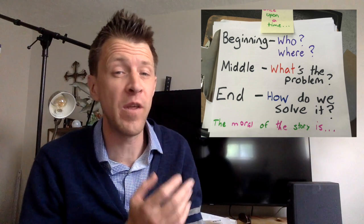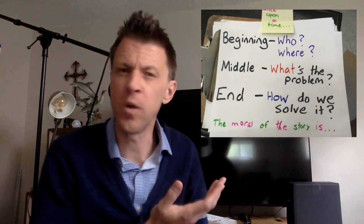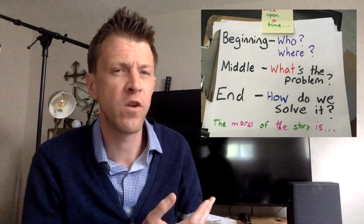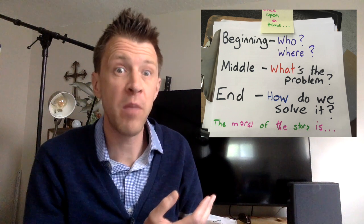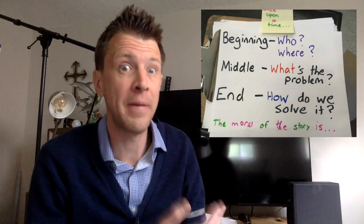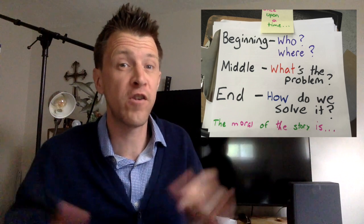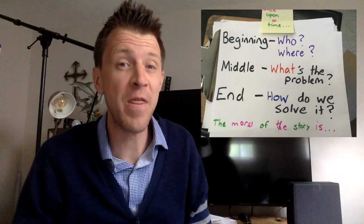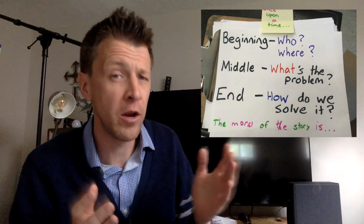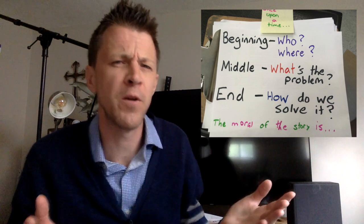In the story that we just told, at the beginning we learned who the story was about — in this case, a princess. We also learned where she was, which was in her castle. Then we learned what her problem was very quickly, which was that she drank all the pop in the kingdom and that made her vibrate because she had such a sugar rush. To get to the end, we had to figure out how the problem would be solved — that was by drinking a lot of water. The moral of the story was that water is better for you than pop.